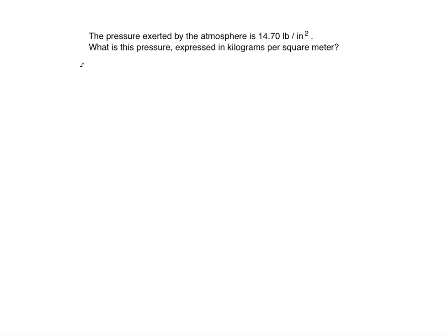First we're going to take 14.70 pounds per square inch. We need to have kilograms in the numerator remaining and square meter in the denominator, right? Because per means that there's a division.